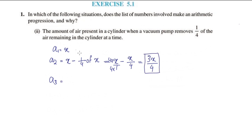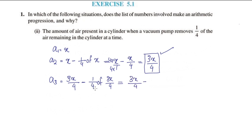For the third term, we remove 1/4 of 3x/4 from 3x/4. So A3 = 3x/4 minus (1/4 of 3x/4) = 3x/4 minus 3x/16 = 9x/16.